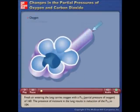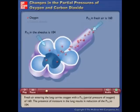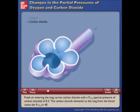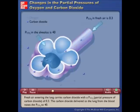Fresh air entering the lung carries oxygen with a pO2 of 160. The presence of moisture in the lung results in a reduction of the pO2 to 104. Fresh air entering the lung carries carbon dioxide with a pCO2 of 0.3. The carbon dioxide delivered to the lung from the blood raises the pCO2 to 40.